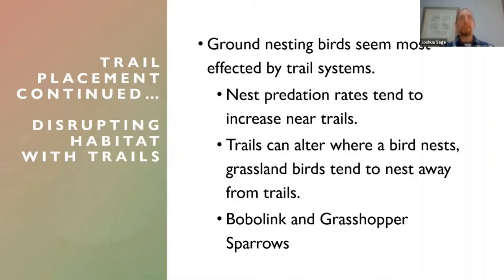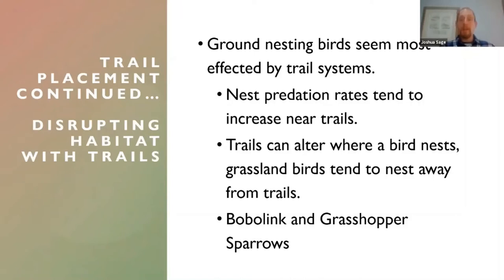Two of the birds we're really trying to boost populations for are the bobolink and the grasshopper sparrow. We are really starting to think about where we place our trails and where we have placed trails in the past — and is there a way to make sure people can still access our sites while helping these birds in need of conservation? If you've got say a five-acre grassland habitat with a perimeter trail and four trails bisecting it, you're probably not going to get any conservative grassland birds to nest there because there's just too much human disturbance. So when you're placing your trails or maintenance two-tracks, be aware of this.